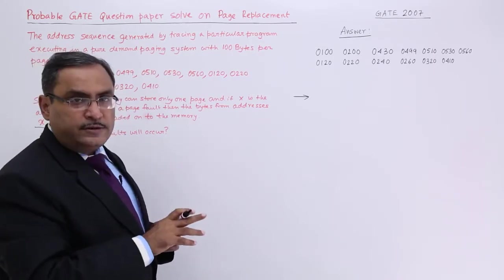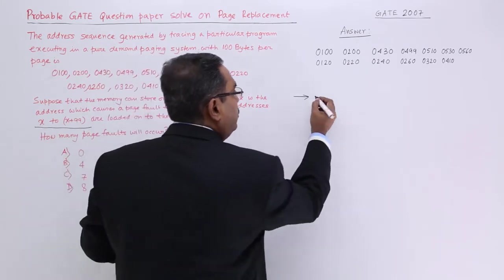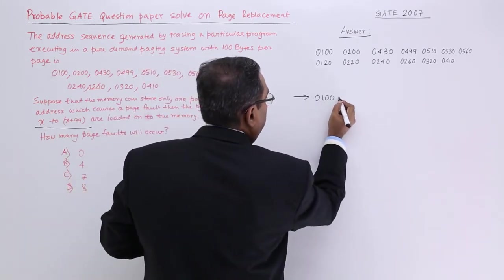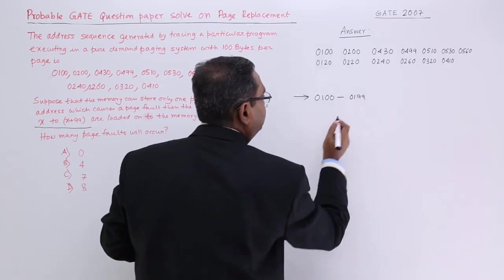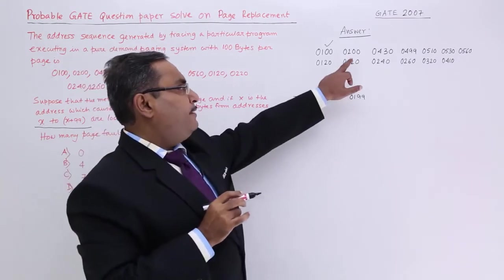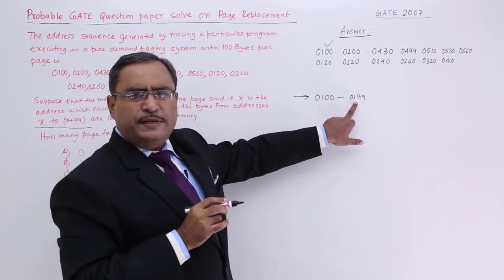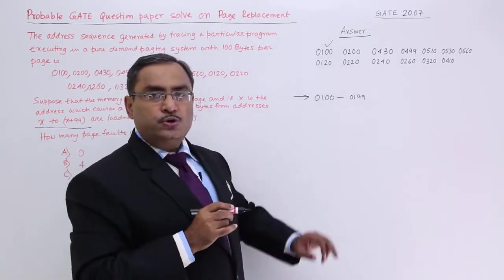Now, whenever that very address is referenced, it is not there in the memory. So I shall load a page starting from 100 to 199. It has got loaded. Now, the next address has been called.